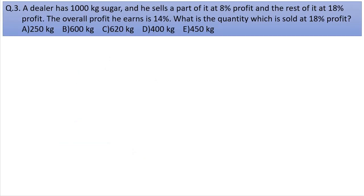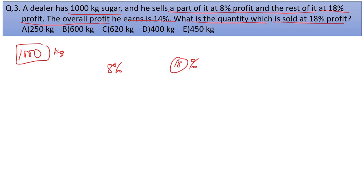Question 3: A dealer has 1,000 kg of sugar and he sells part of it at 8% profit and the rest at 18% profit. His overall profit is 14%. What is the quantity sold at 18% profit? One part is sold at 8% profit, another part at 18% profit, and the total profit is 14%.